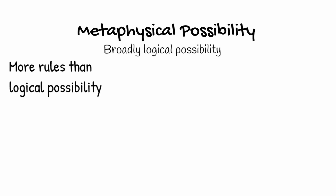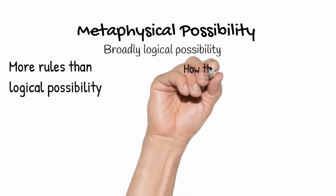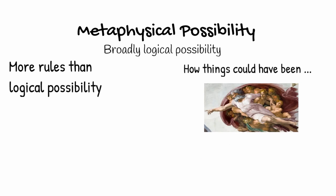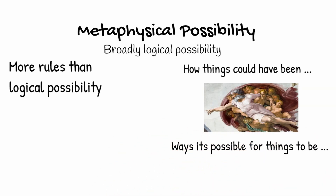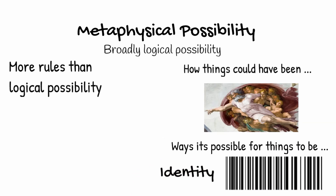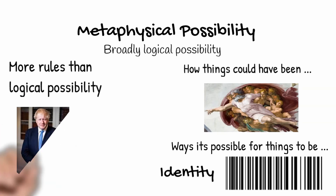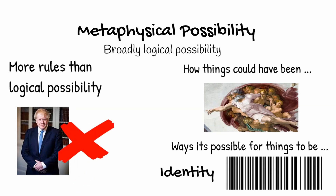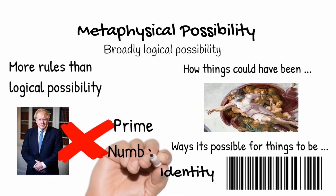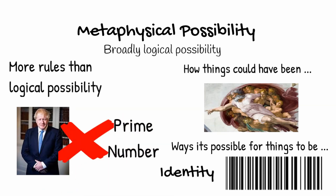People therefore often think of metaphysical possibility as telling us how things could have been, or how God might have made things, or ways it's possible for things to be. Another thing philosophers focus on to understand this type of possibility is the identity of an object — what that object is. On this type of possibility, it's clear that it's impossible for the prime minister to be a prime number, because a prime minister just is not the right type of thing to be a prime number.